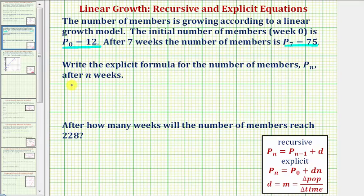But first, using the explicit equation P_n = P₀ + d×n, because we know P₇ = 75, we'll substitute 75 for P_n and 7 for n. So we'd have 75 = 12 + d×7. So here we have 7d.